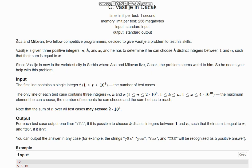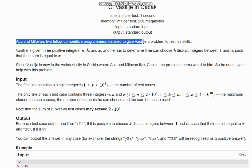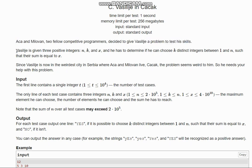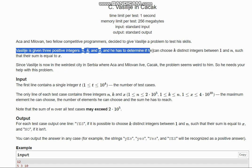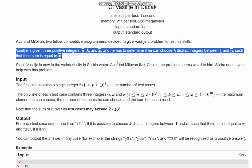The problem states that Aka and Milovan, two fellow competitive programmers, decided to give Vasilijay a problem to test his skills. Vasilijay has given three positive integers N, K and X, and he has to determine if he can choose K distinct integers between 1 and N such that their sum is equal to X.